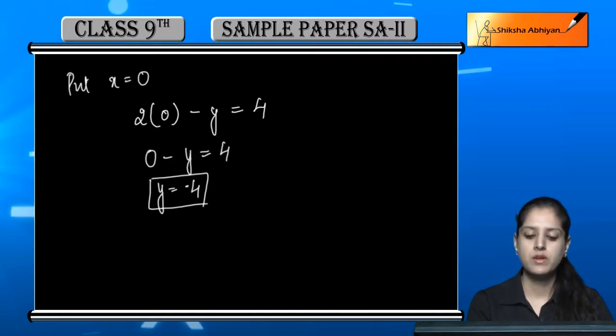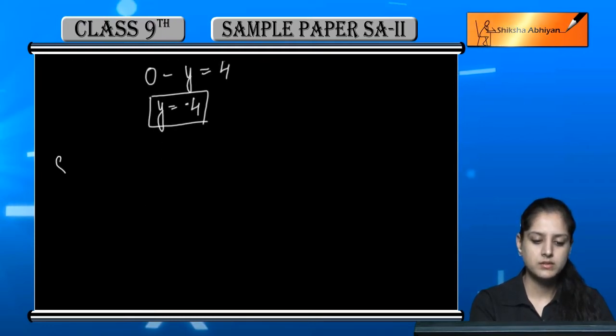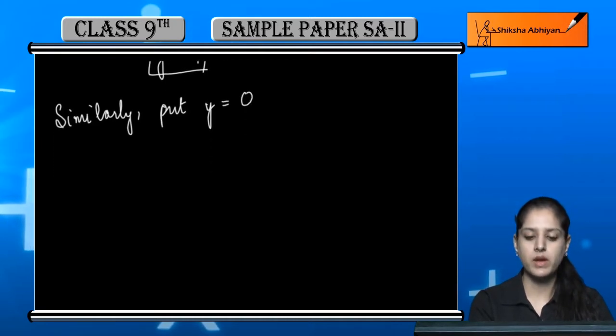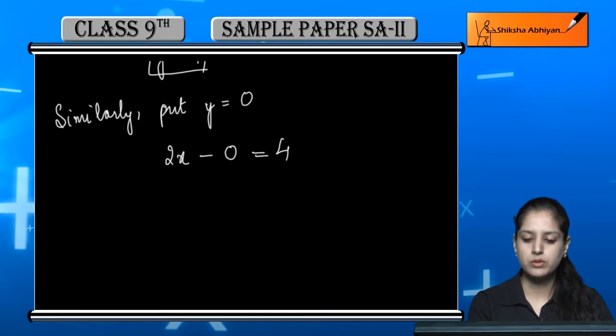Similarly, put y is equal to 0. 2x minus 0 is equal to 4. So 2x is equal to 4. x ki value ayi 4 by 2 ya phir 2.